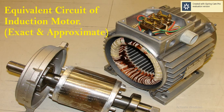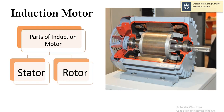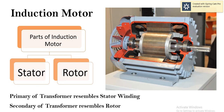Hello everyone. The topic for today is equivalent circuit of induction motor. Induction motor has two parts namely stator and rotor. Stator is the stationary member whereas rotor is the rotating member. As we know, induction motor is also called a rotating transformer. The primary of the transformer resembles the stator winding of induction motor whereas the secondary of transformer resembles the rotor.